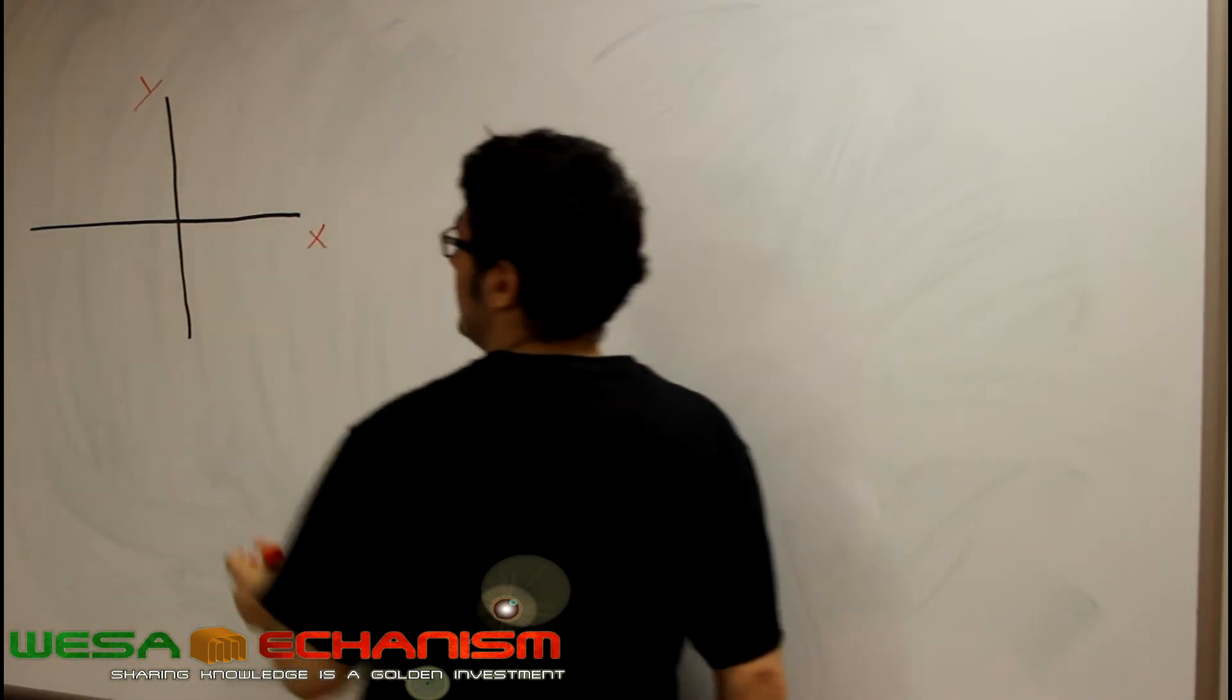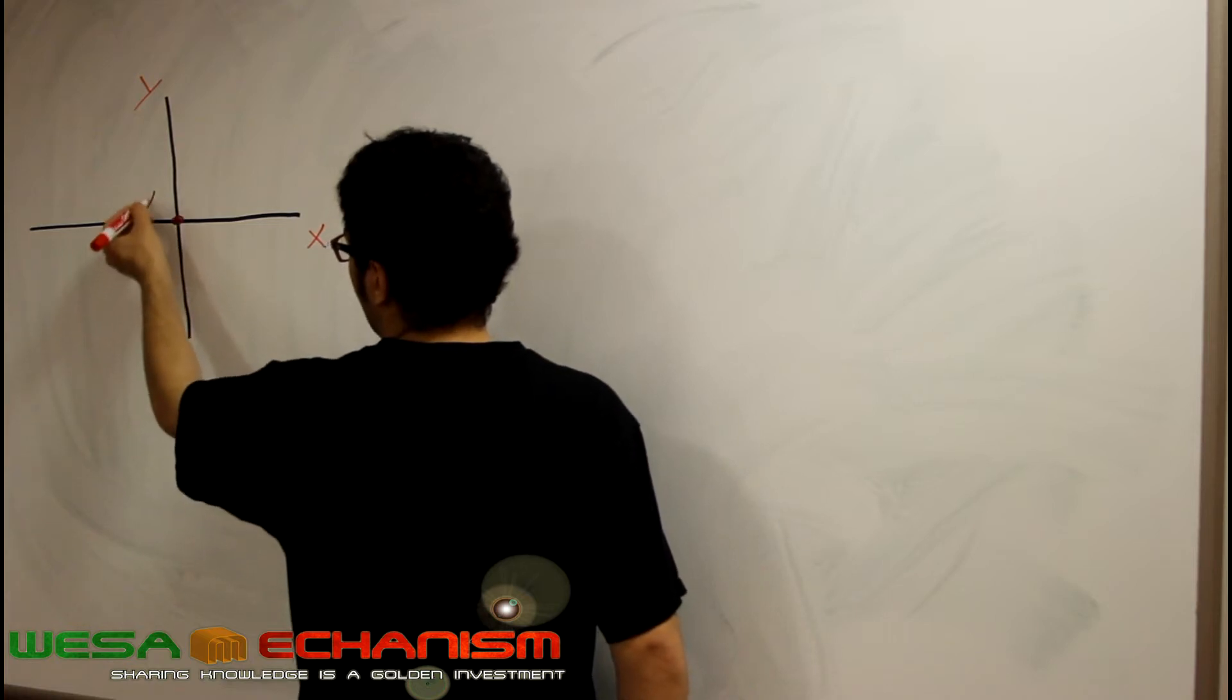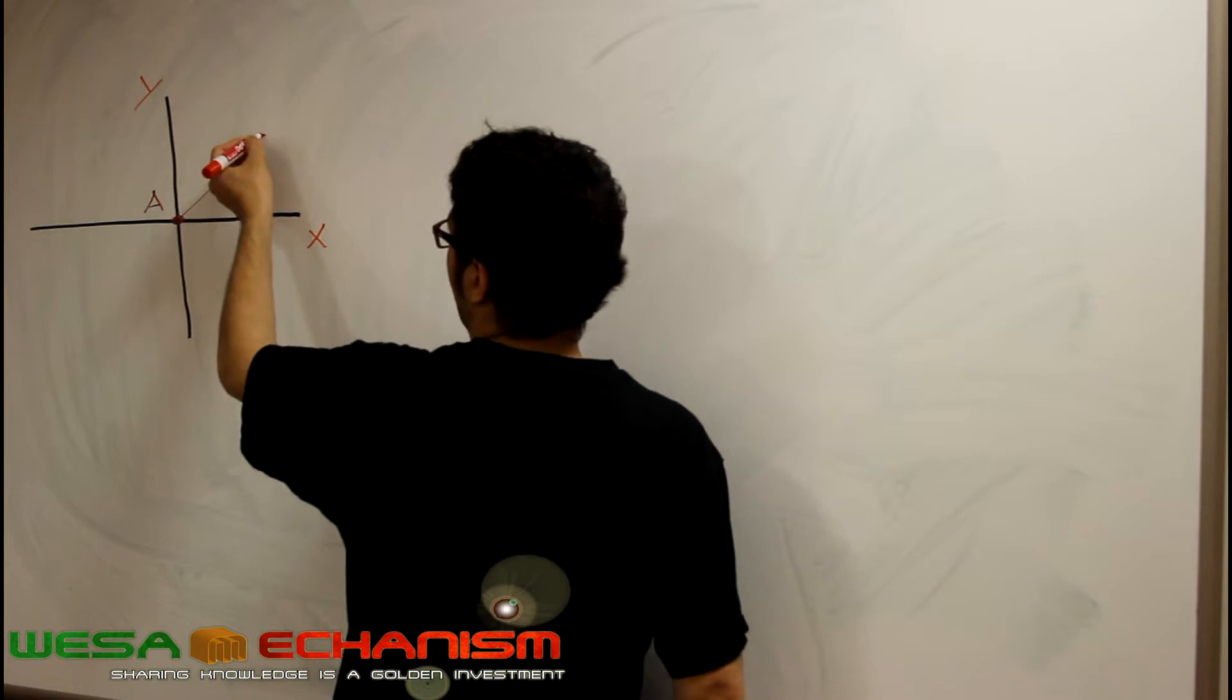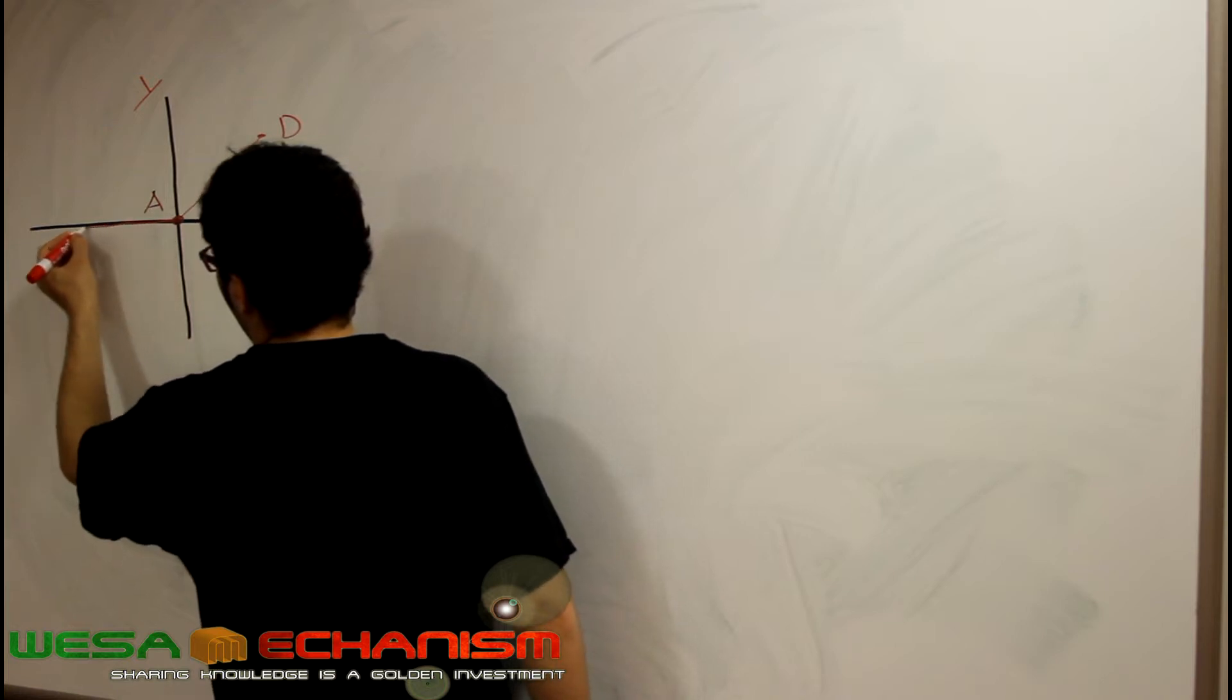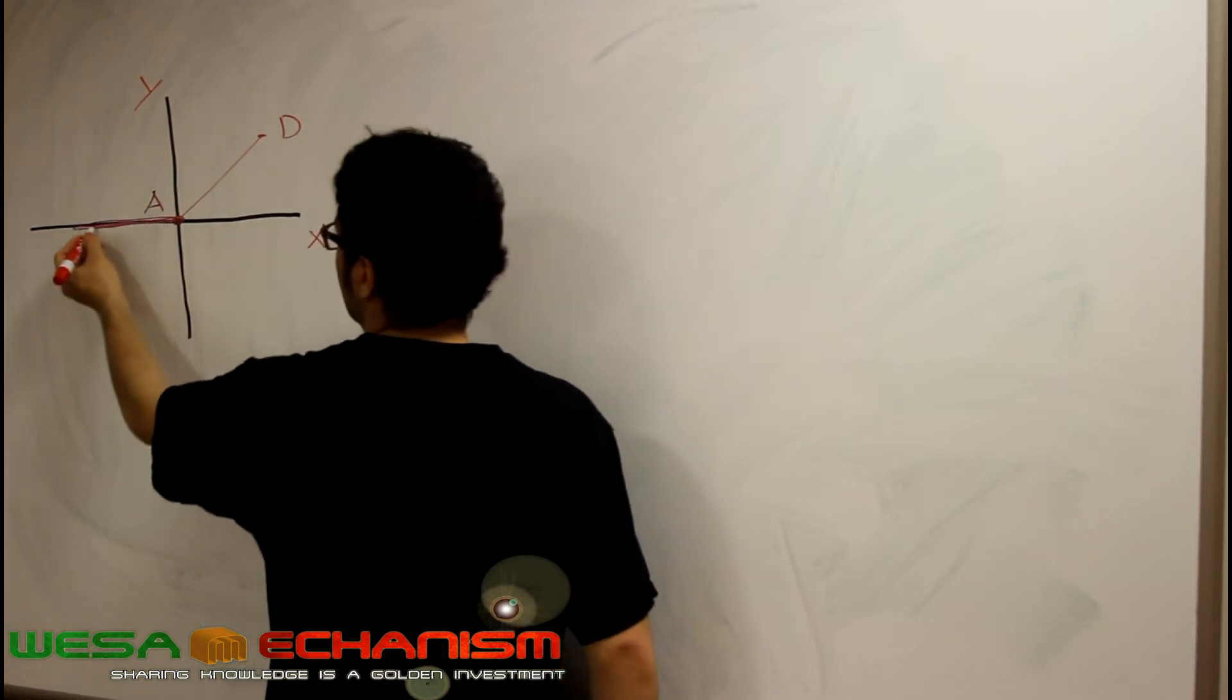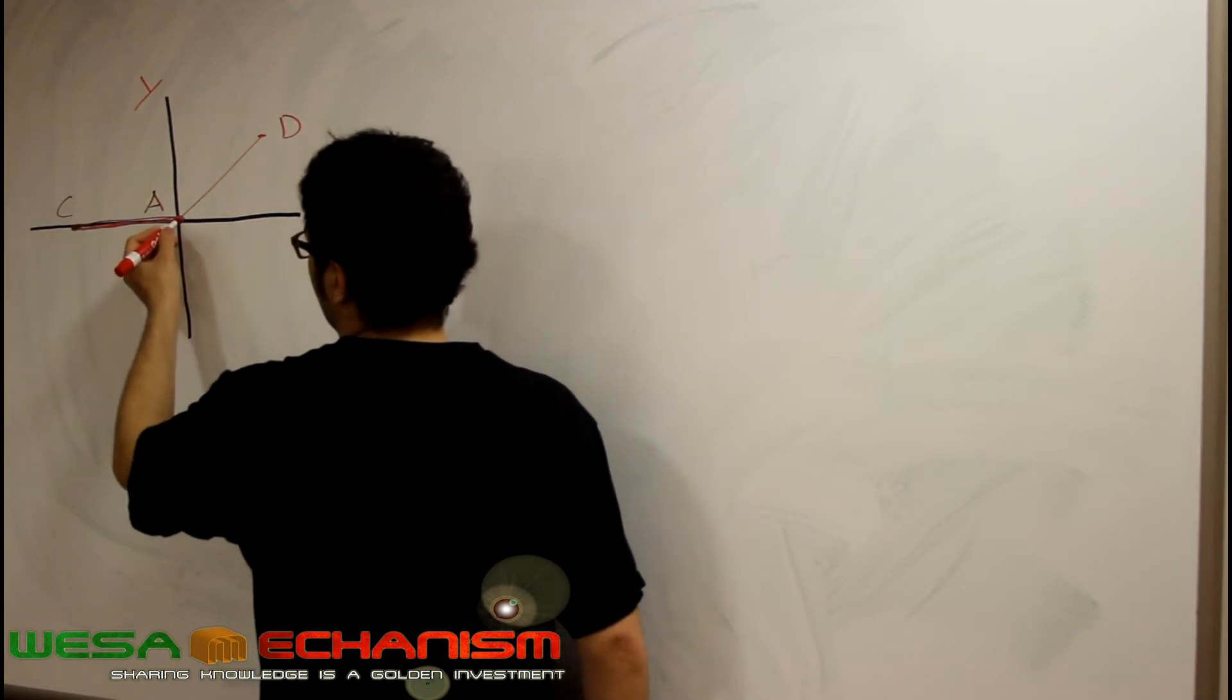We are going to use A as our reference point. This is A. We have the first rope, we are going to call it D, or AD. This is our second rope, which seems to be on the same axis as the X axis, and it is going to be AC.